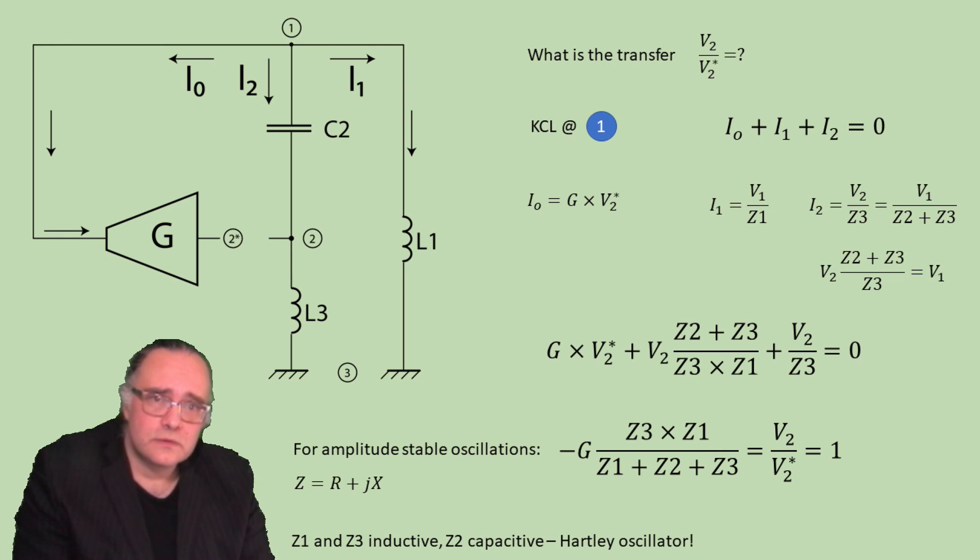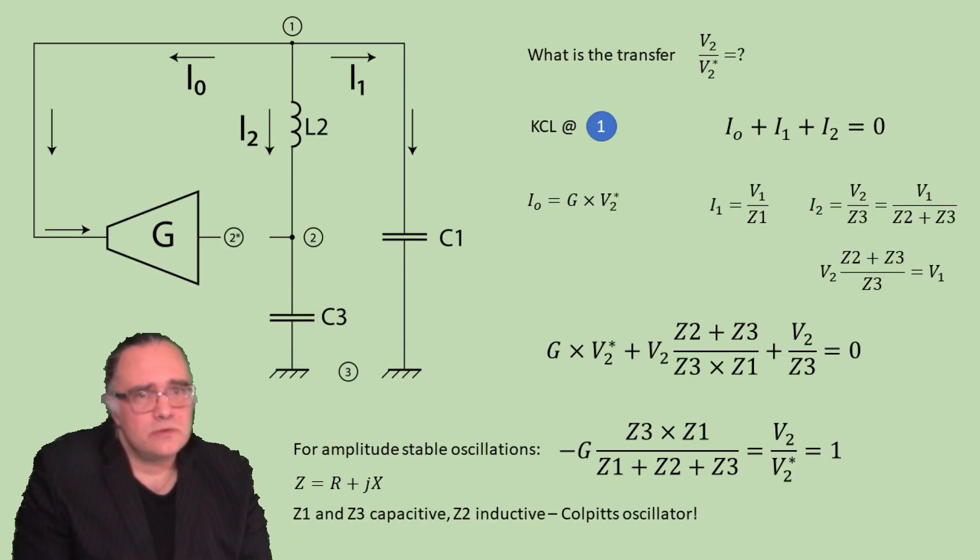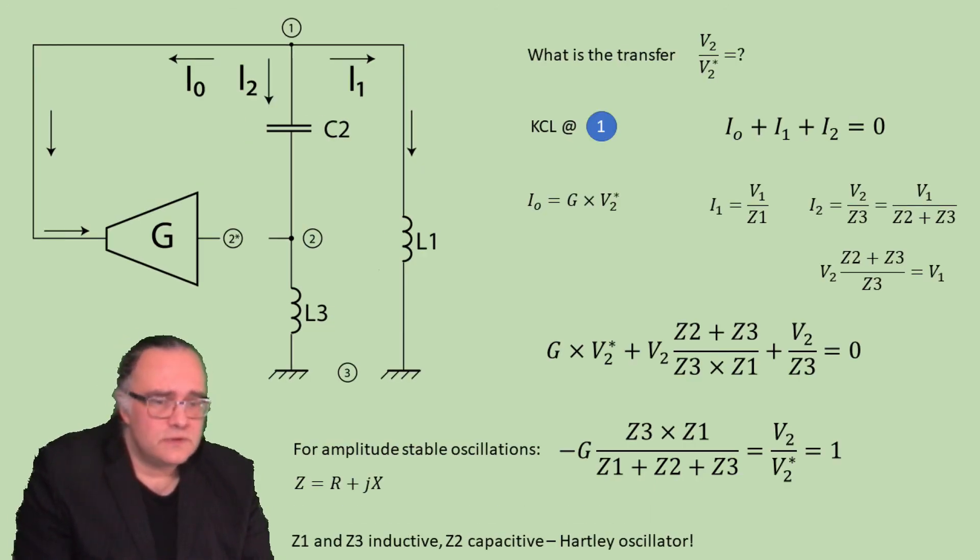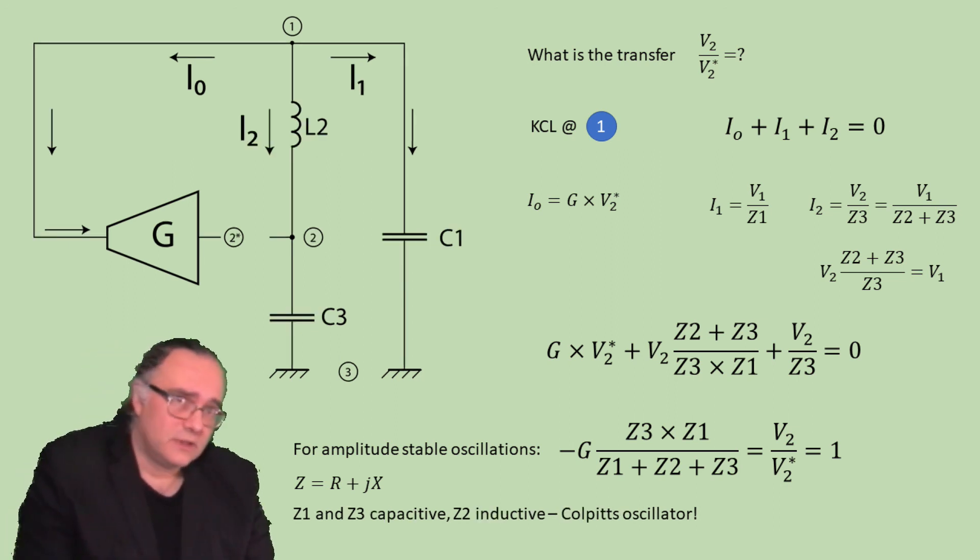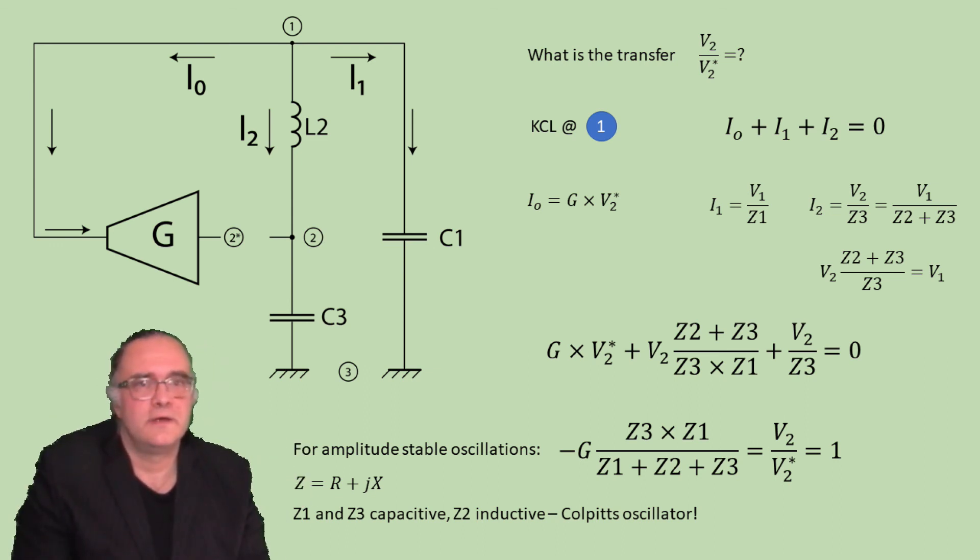The other alternative is if Z2 and Z3 are inductive while Z1 is capacitive, and then you get the Hartley oscillators. And at this point, keep in mind what we did in the beginning with the LC tank. We took the input for the transconductance stage on the other side of the LC tank, and the ground we defined in the middle of either the capacitor or the inductor. If you do this for the inductor, you have the Hartley oscillator. And if you do this ground in the middle of the capacitor, so you split the capacitor in two, you have the Colpitz oscillator. Thank you very much for your attention.